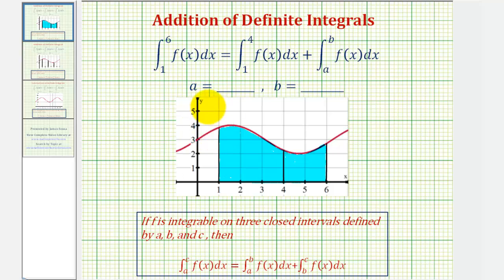Because f of x is non-negative, if we integrate f of x from one to six, it would give us the area of this blue shaded region, which means that the sum of these two definite integrals must also give us this same area.